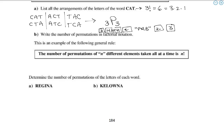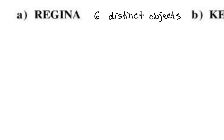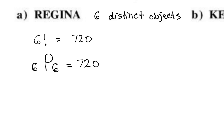How many letters in the word 'Regina'? Six distinct objects — they're all different. So you always ask yourself: are the letters different? Yes. So the answer is 6 factorial, which is 720. Another way to write it: six objects permutating six at a time — 6P6 — also 720. Either way is fine.